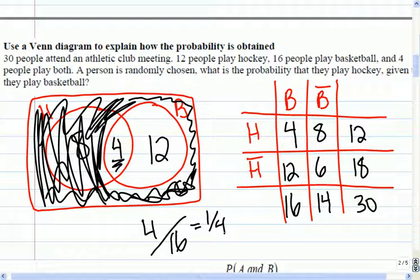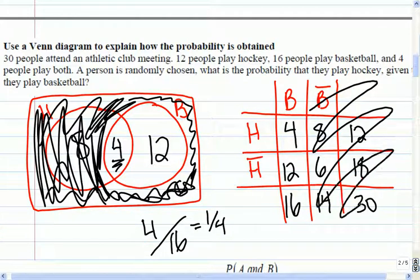If we did it with the table method, very similar. We look at the table and we say, where are we on this table? Well, the basketball player is what we've chosen, so this part of the table is useless to me because the person has to play basketball. Now that I know they play basketball, there's 16 people in the sample space, and I want to know who plays hockey. There's 4 out of 16 ways to do that.